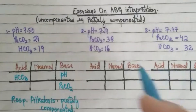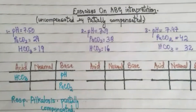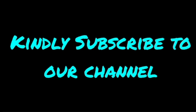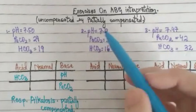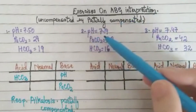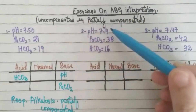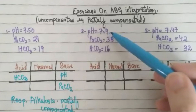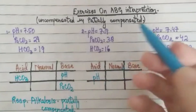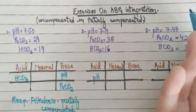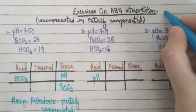We will cover exercises for partially compensated respiratory acidosis, respiratory alkalosis, metabolic acidosis, and metabolic alkalosis — all of these. Now for the second case: pH is 7.19. Again, pH is on the acidic side, so we put the pH on the acidic side.